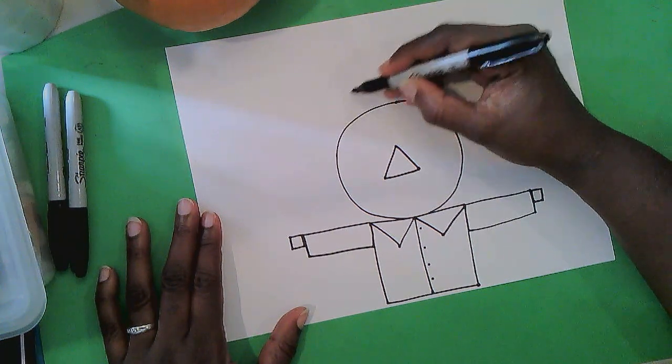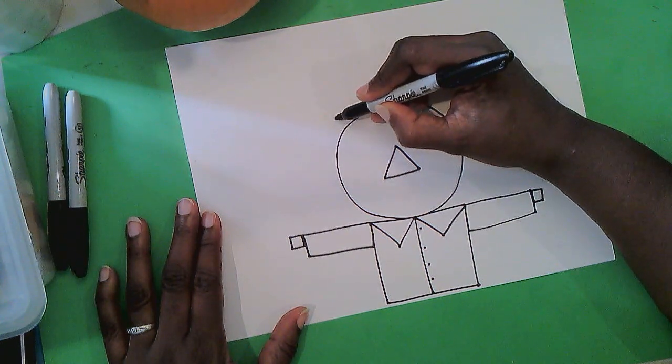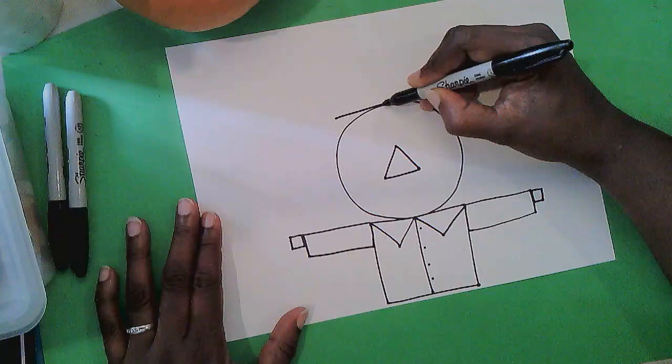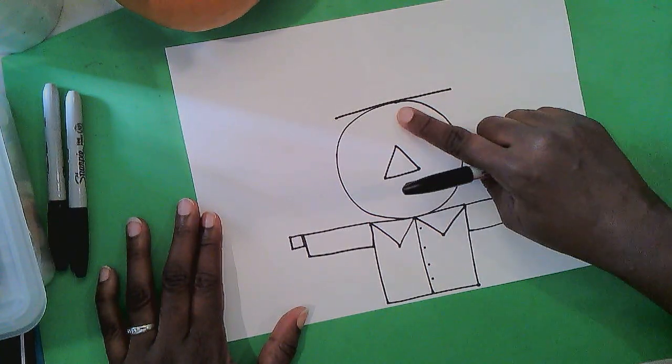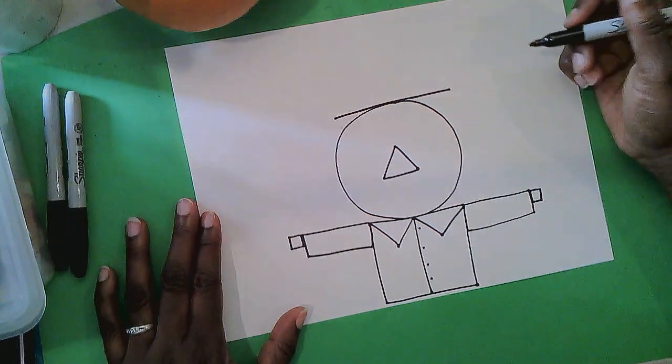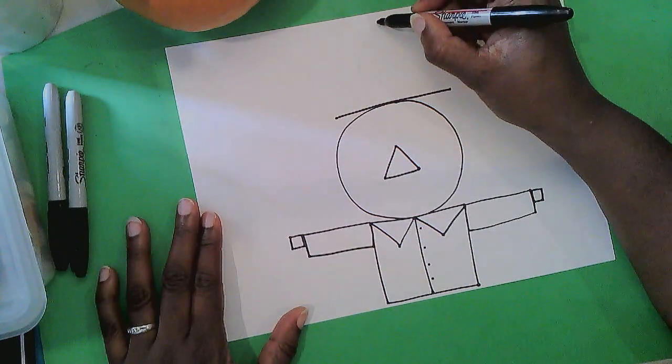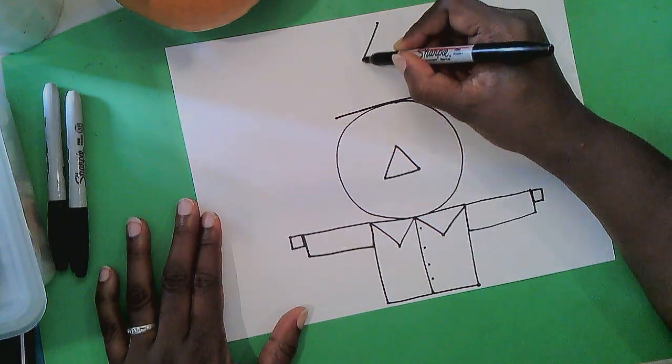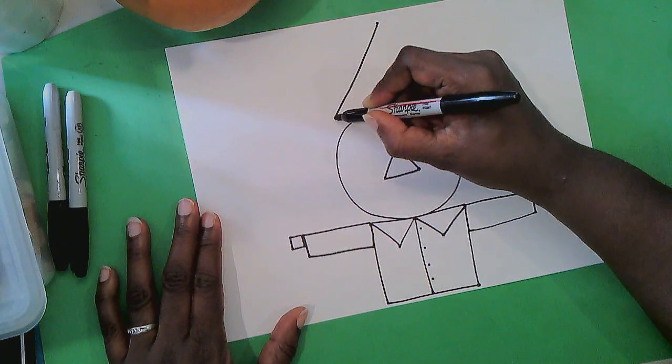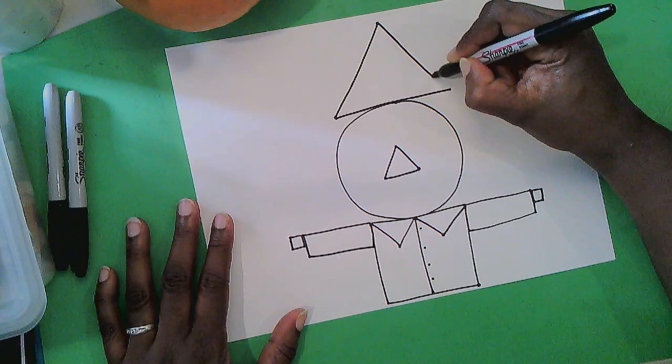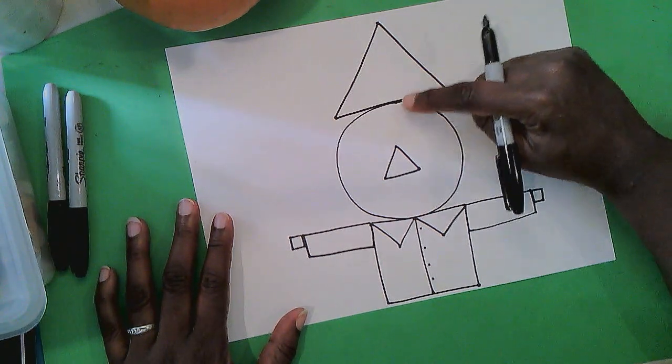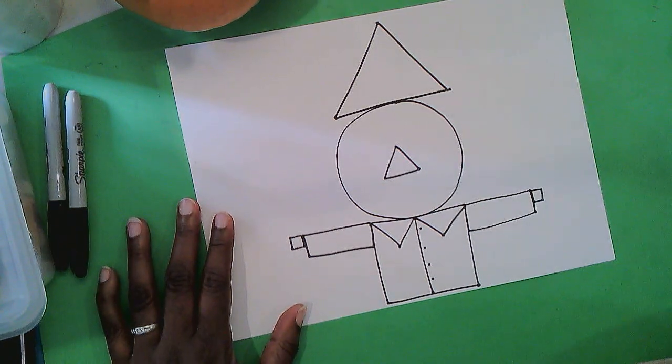Let's go ahead and do the hat because the hat is a triangle as well. So right there that line that's the bottom of the triangle is touching the top of the circle. And then we'll start at the top and pull all the way down to the end of that line and go back to the top, pull all the way down to the end of that line. And now we have how many triangles do we have?